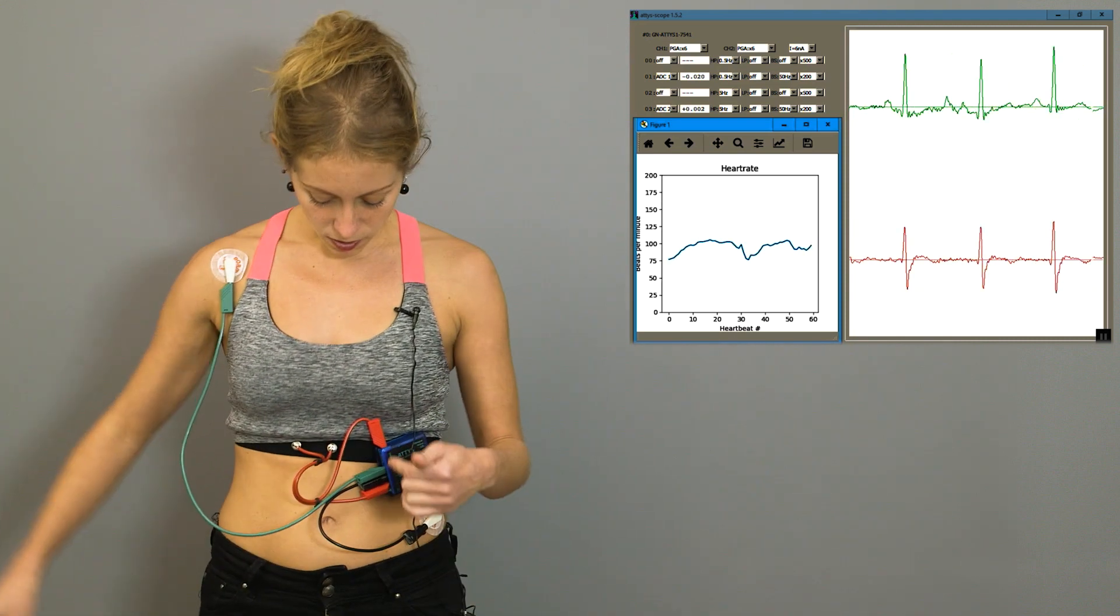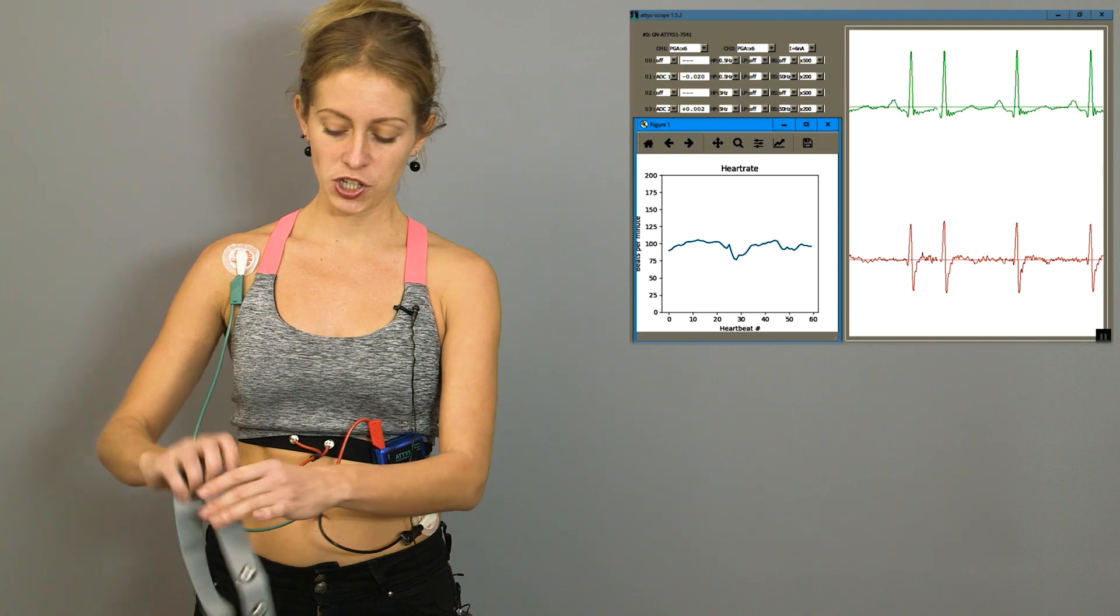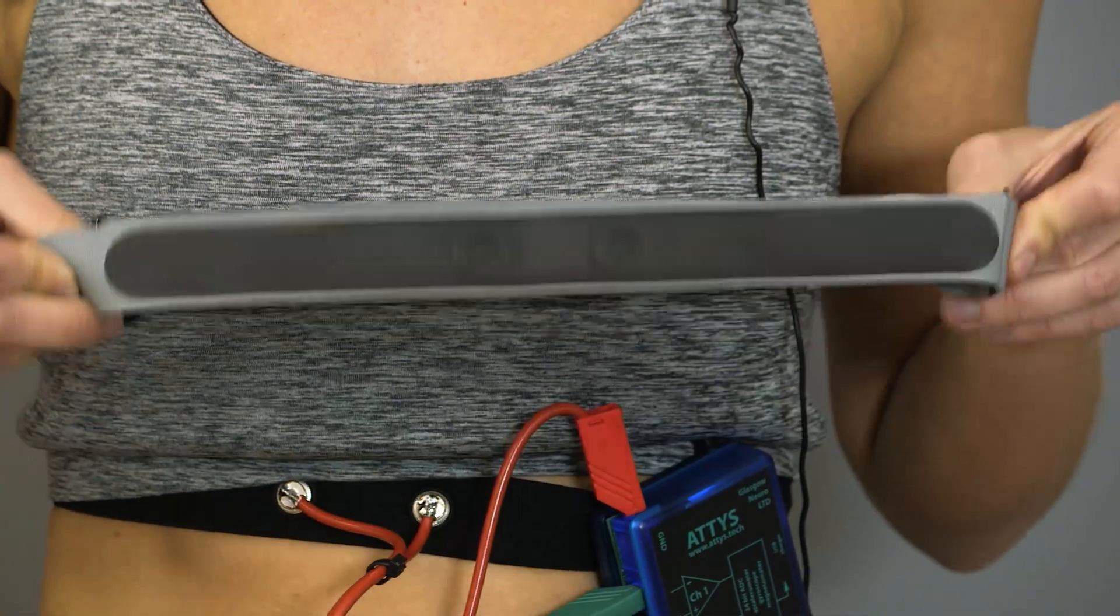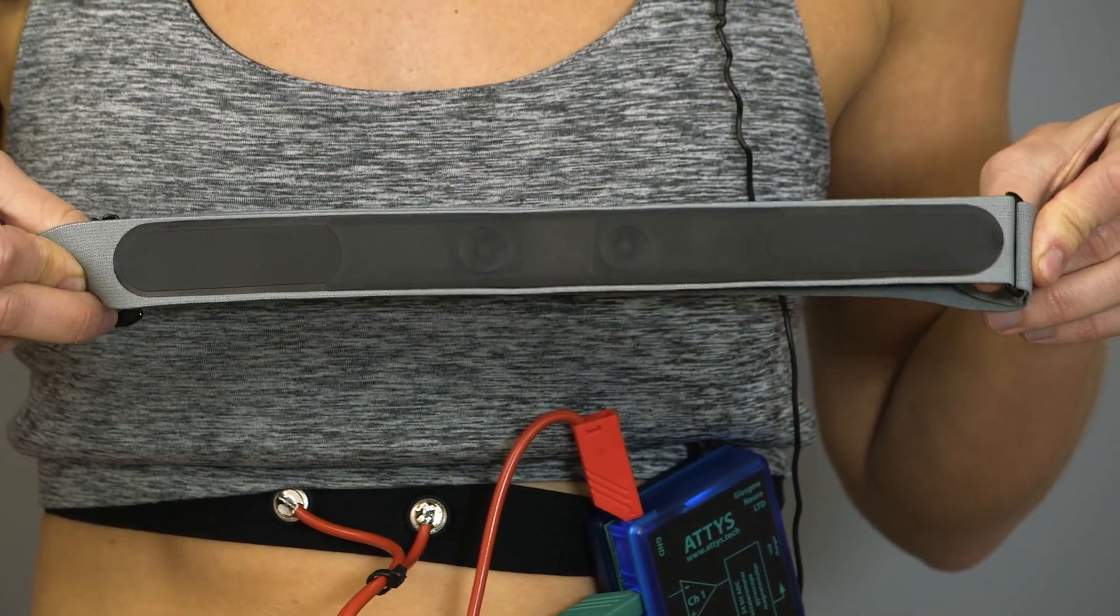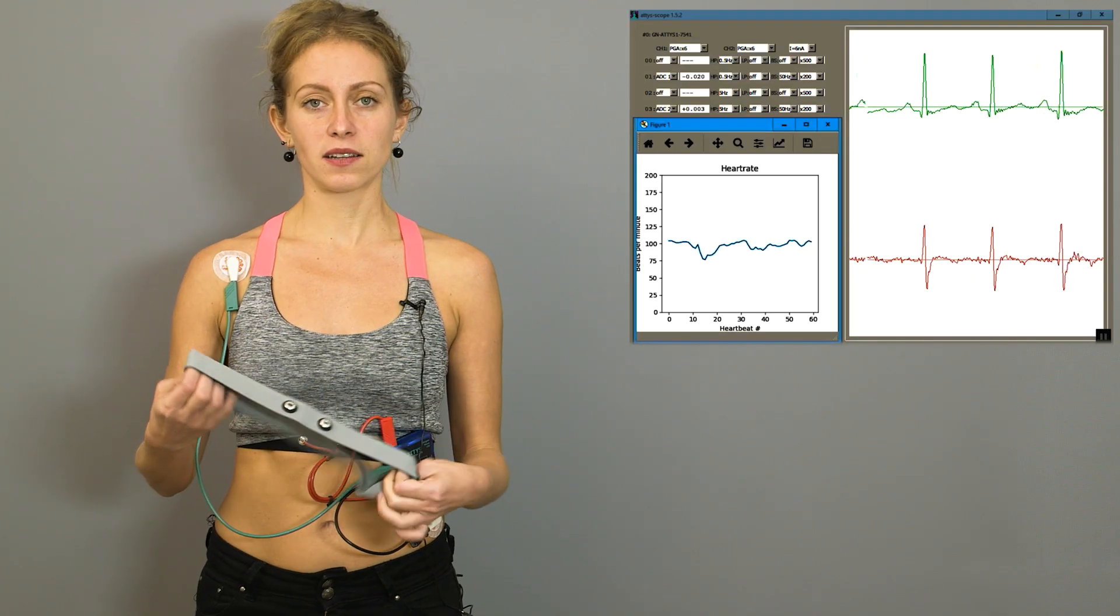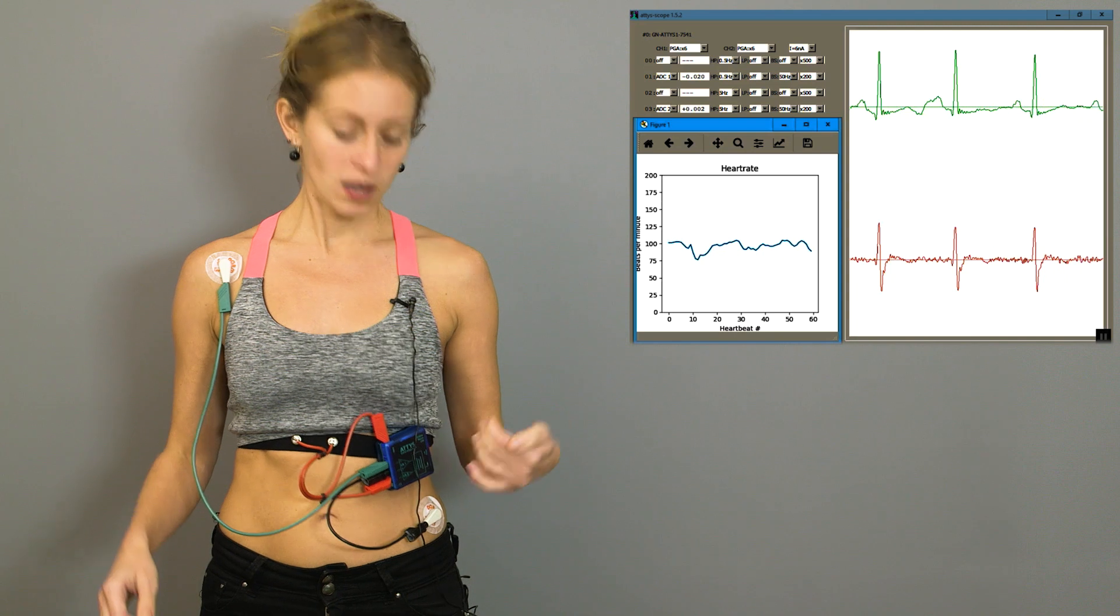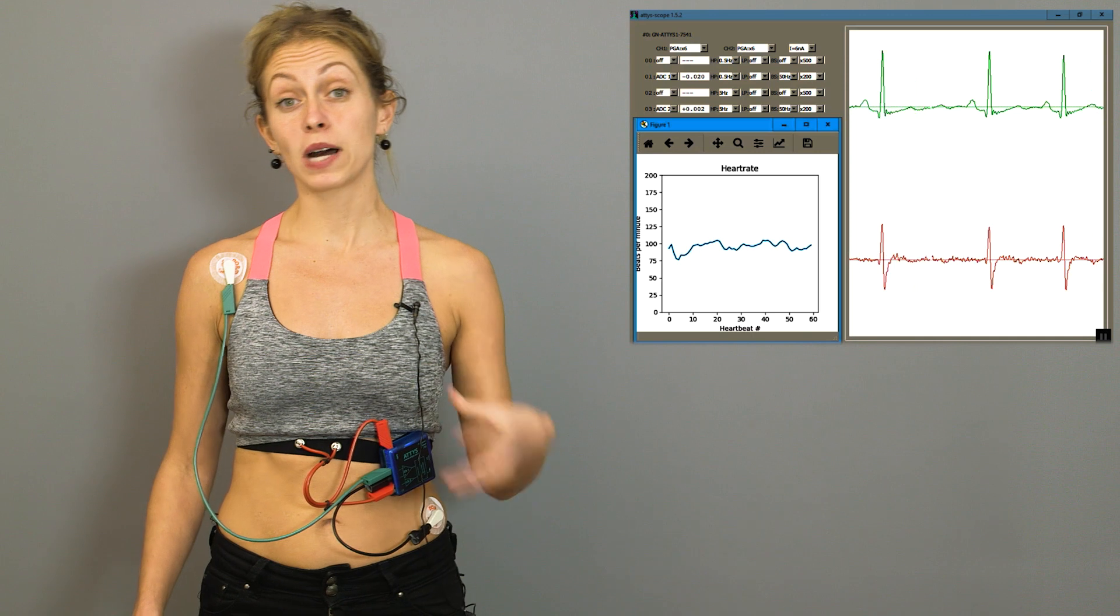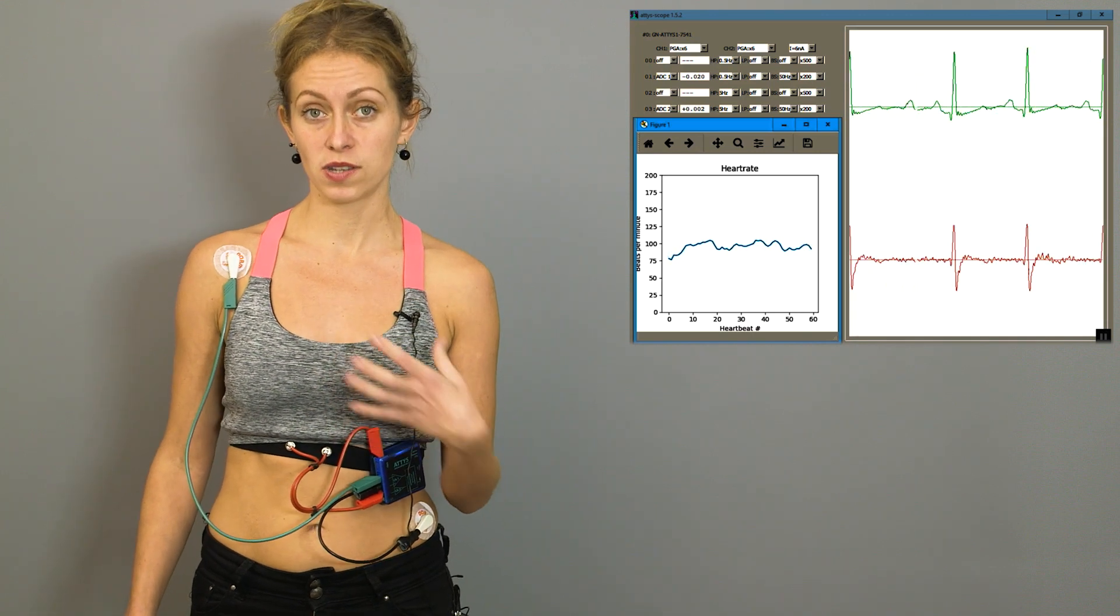So what I have on me is a chest strap, just like this one over here, which has got two electrodes directly woven into it. And it sits exactly over my heart. And this here is an ECG amplifier that is also attached directly to the strap.